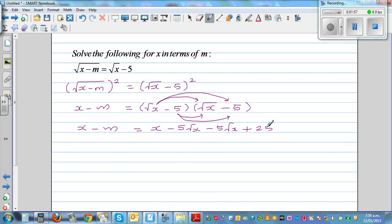This is where the major mistake happens. So this is x minus m equals x minus 10 times square root of x plus 25.